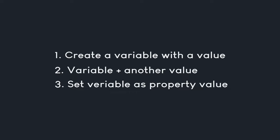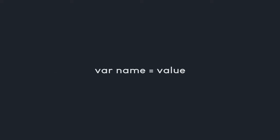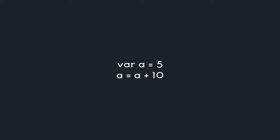Variables are created with the keyword 'var,' then the variable name, then an equal sign, then the value. For example, 'var a = 5' creates a variable named 'a' with value 5. On the next line you could reference 'a' and add 10 to it. Let's implement all of this straight into After Effects.